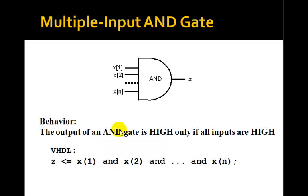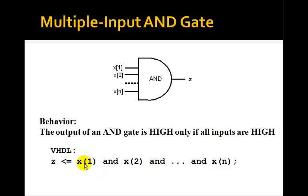In VHDL, we would write z using the signal assignment statement with the less-than-and-equal sign, as x1 AND x2 AND... We have to write out the AND symbol. And curved brackets are used rather than square brackets to indicate array elements in VHDL.